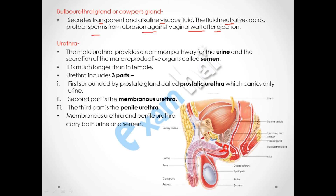The urethra is also part of the male reproductive system and has a common opening for both urine and the secretion of the male reproductive organ — semen. The vas deferens carries sperm and joins the urethra, so sperm is also released from the urethra. The male urethra is much longer than the female urethra.